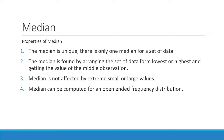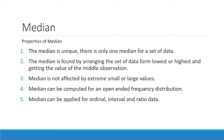Since we're only looking at the middle, we won't be concerned with the specific or exact value of the 'less than' or 'greater than' boundaries. The fifth property is that median can be applied for ordinal, interval, and ratio data. Also, median is most appropriate in skewed data, meaning data that has a certain bias.